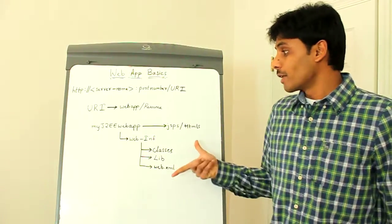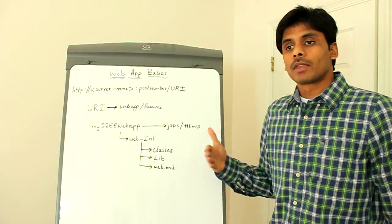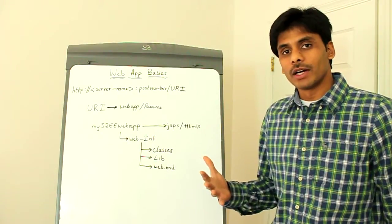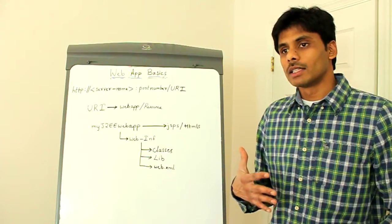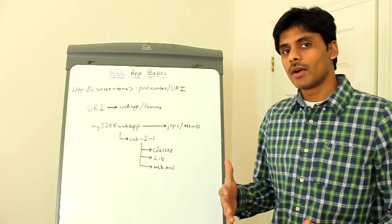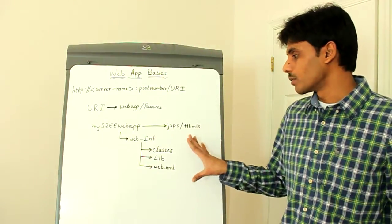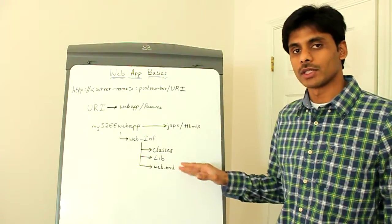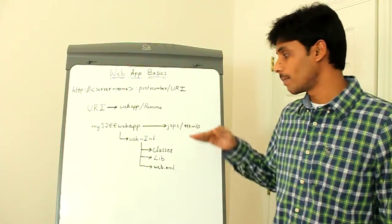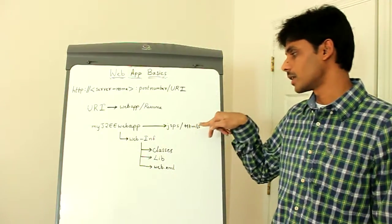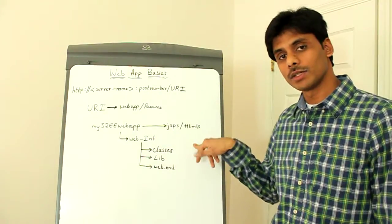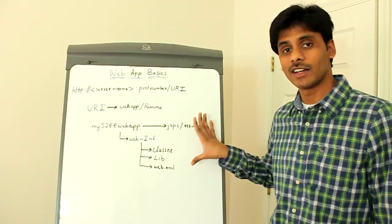And the reason we have this folder structure here is for the application server. This is like an interface or a standard which when followed, the application server knows where to look for the appropriate resources. So when the HTTP request comes in the application server, by default, a J2EE application server will look for the JSP page and HTML here. And the associated class files here. And that's the reason we have this standard.